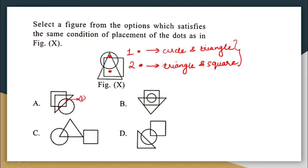Second, I have to find a region where I can place a dot within the triangle and square alone. There is definitely a region here — between only the triangle and the square, not part of the circle. So I can place the second dot there. In option A, I am able to place both the first dot and the second dot, so option A is my answer.